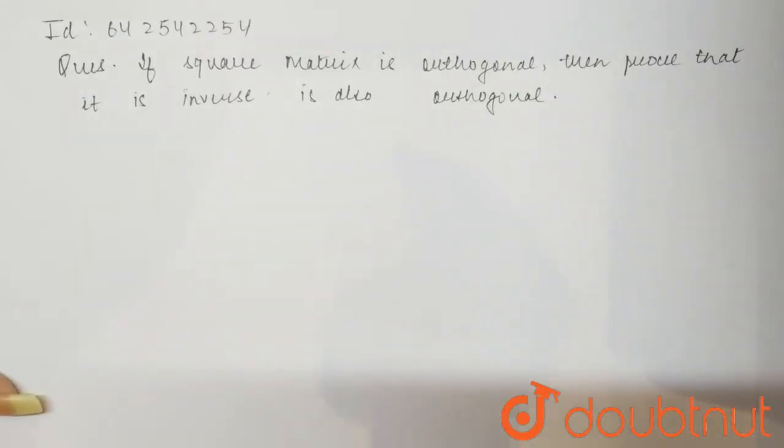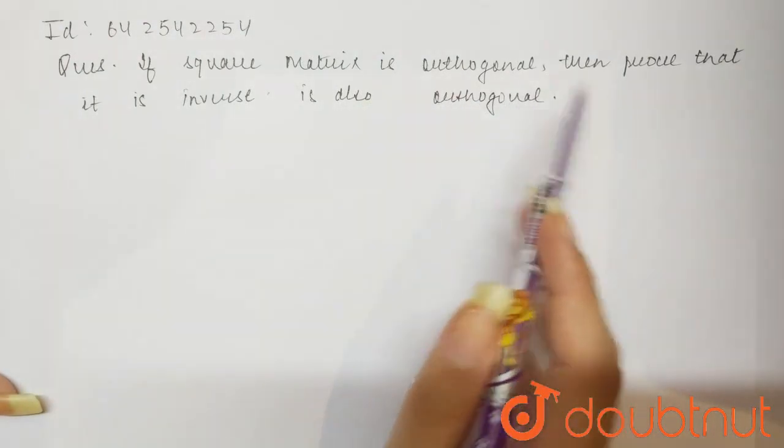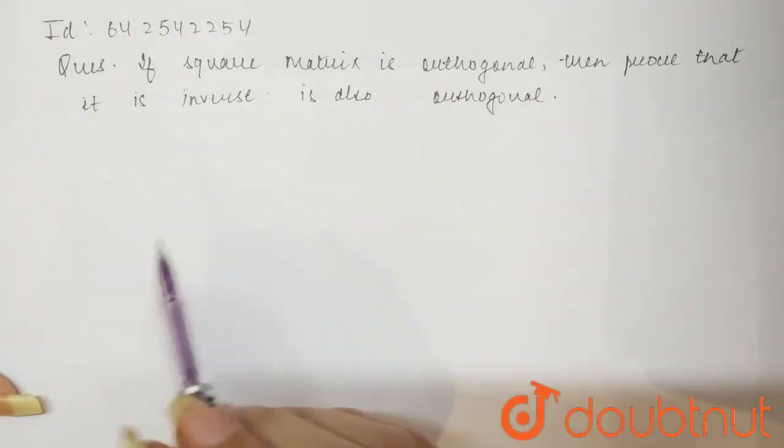The question to answer is: if a square matrix is orthogonal, then prove that its inverse is also orthogonal.